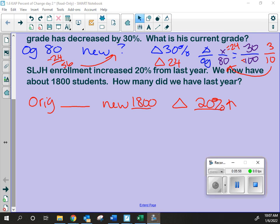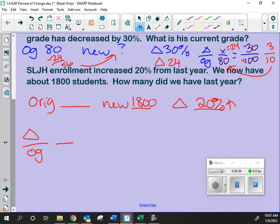The original, the new is 1,800. 1,800 is our new? The change is 20%. It's 20% increase. Okay. And then do we know anything else? No. Great. Okay. So let's see if we can solve our proportion. Let's see if we can set it up. Our change over our original.